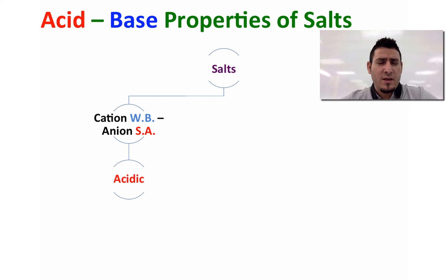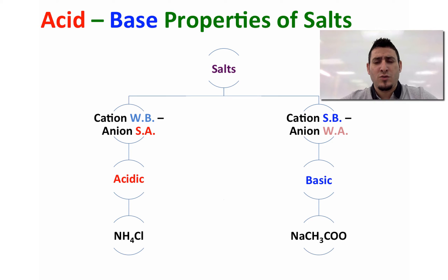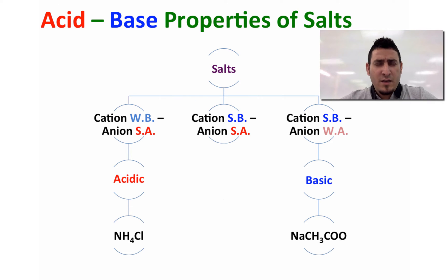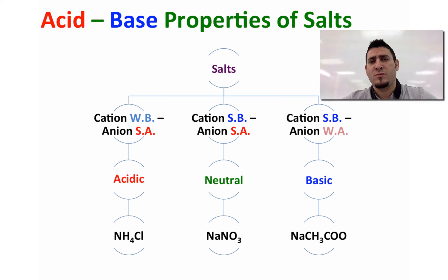An example of this is NH4Cl. If the salt is made from the cation of a strong base and the anion of a weak acid, the salt will have a basic property, and the example of this is sodium acetate. Now if the salt is made from the cation of a strong base and the anion of a strong acid, the salt will have a neutral property. An example of this is sodium nitrate.